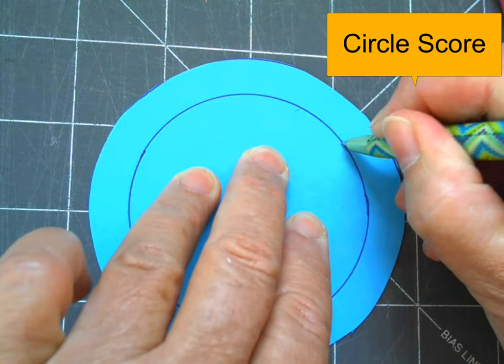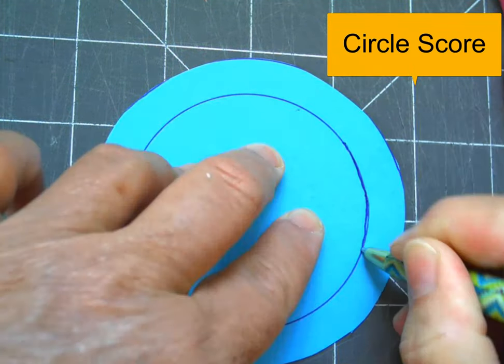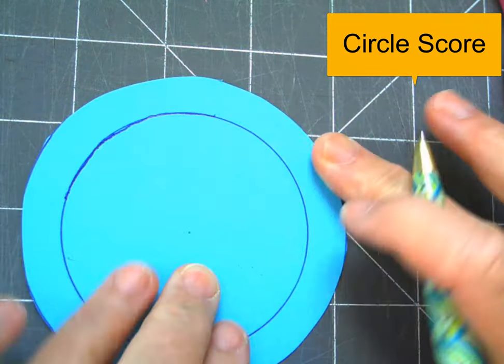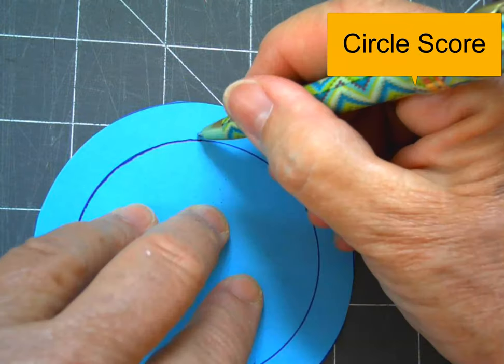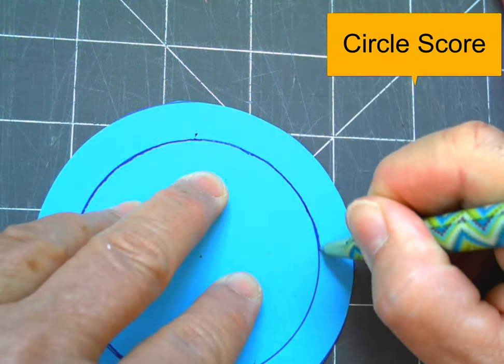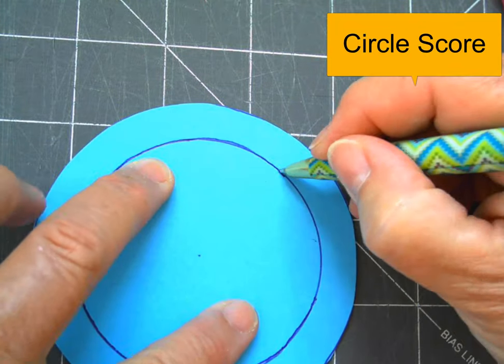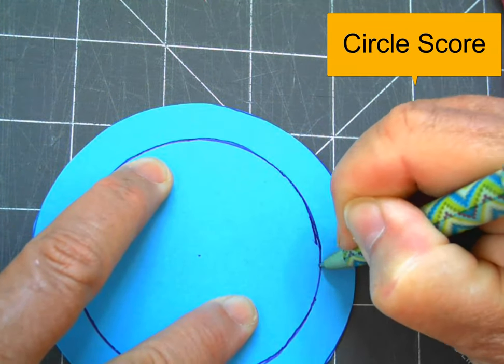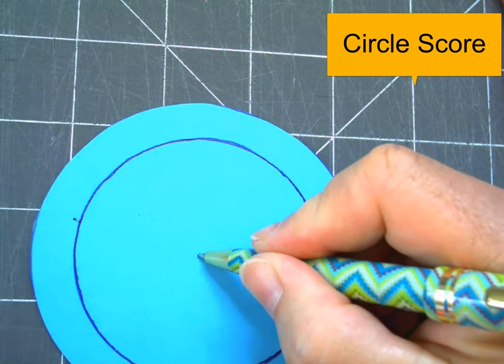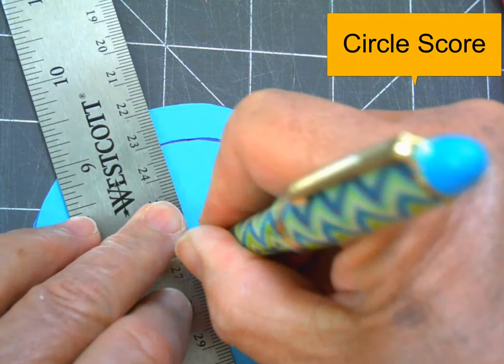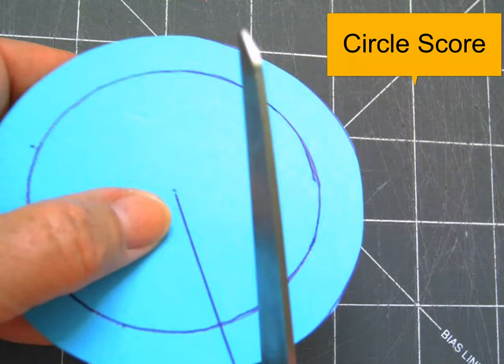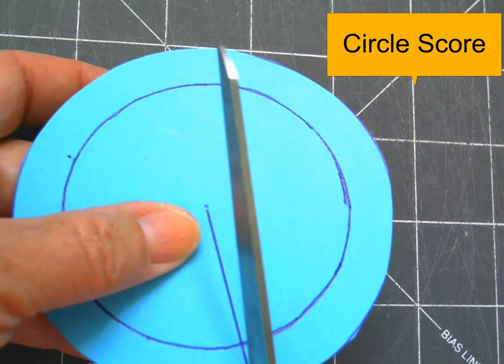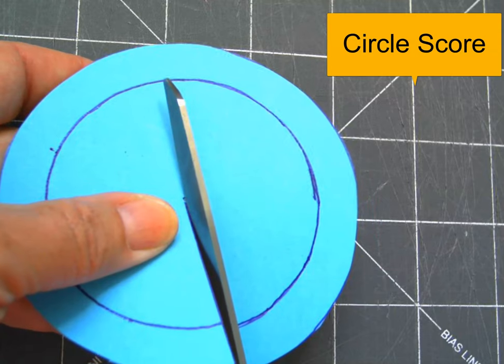Then I'm going to score the inner circle. I'm just taking a pen and pressing really hard along that inner circle score line. You can see here where I've marked the center of this circle. I'm going to make a straight line that goes to the center and cut along that line as well, and stop when you get to the center.